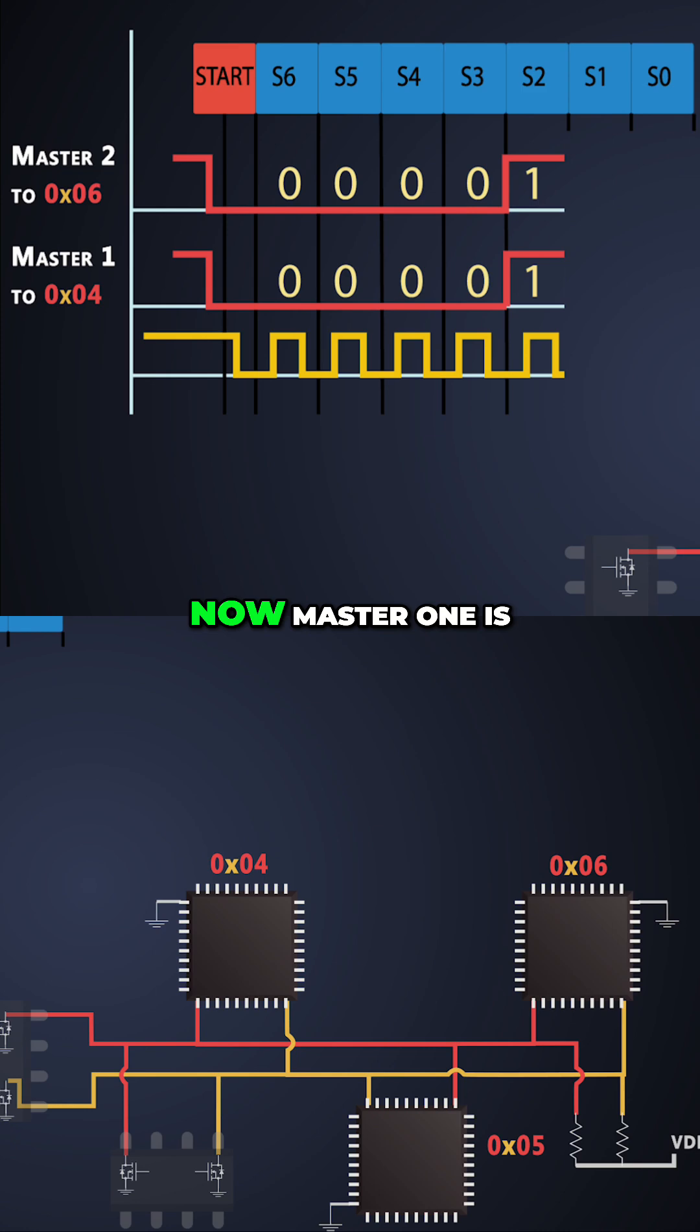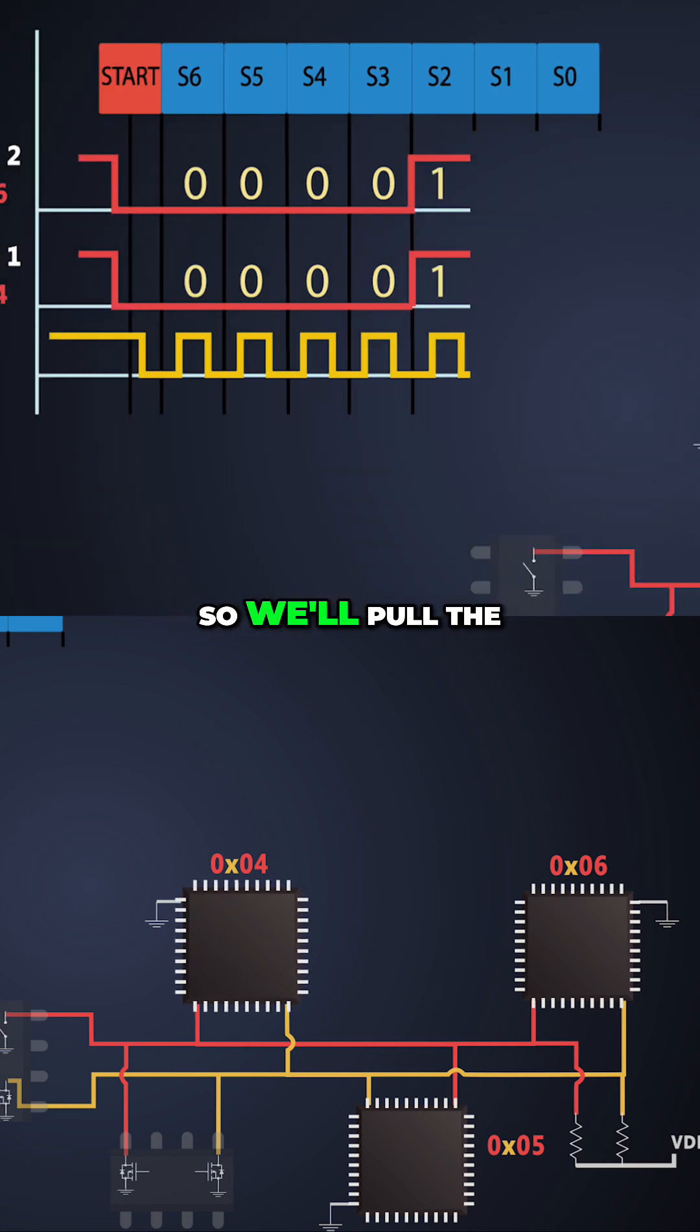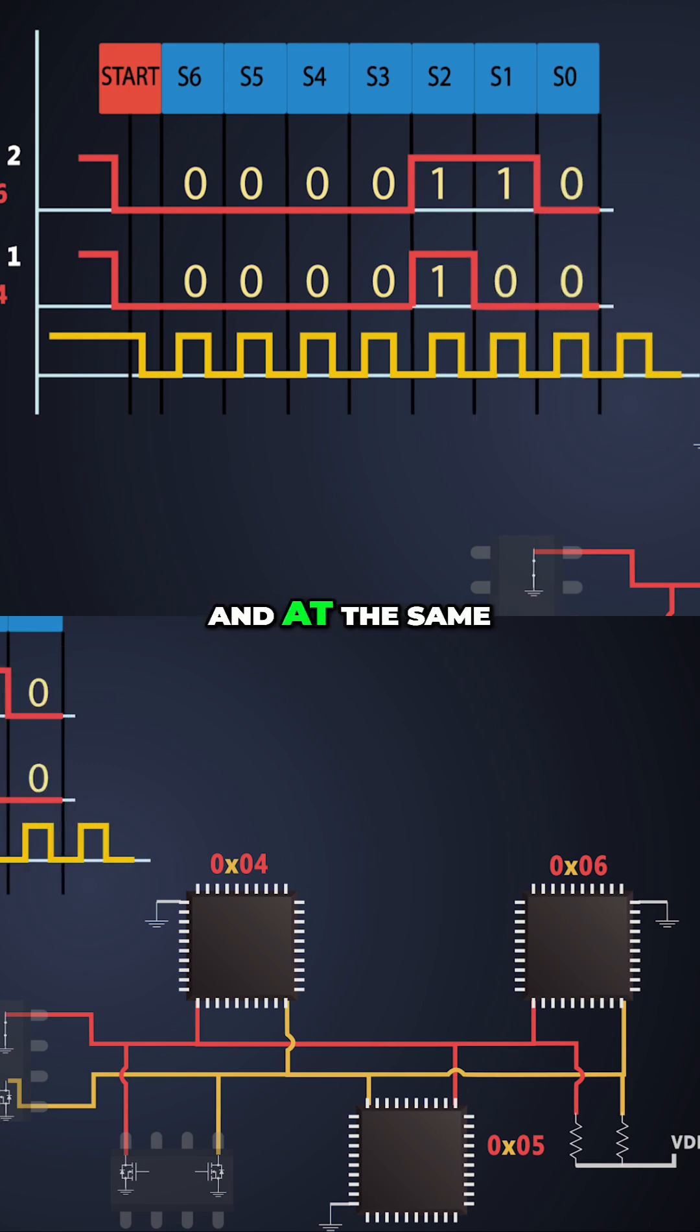Now Master 1 is addressing to 0x04, so it will pull the SDA line to 0 on the next clock pulse. At the same time, Master 2 is addressing to 0x06 and it will try to maintain the SDA line to logic high.